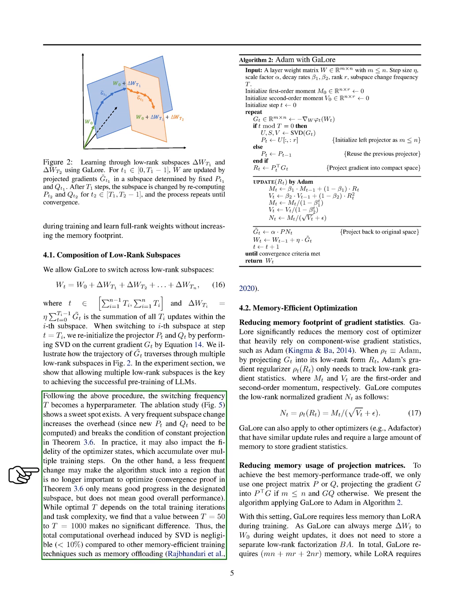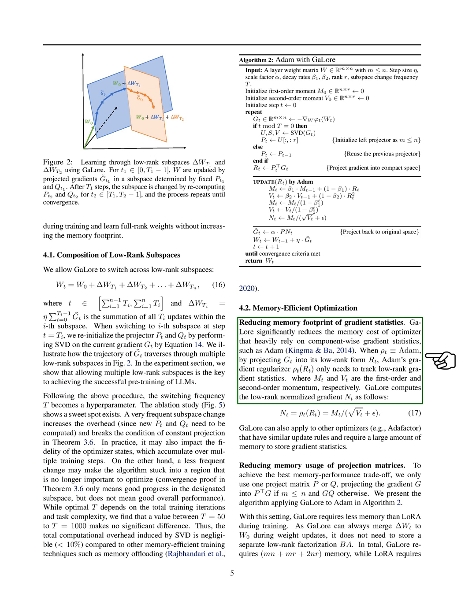Section: Memory-Efficient Optimization. In this section, we focus on optimizing memory usage in training deep learning models. We introduce GaLore, a method that reduces the memory footprint of optimizers like Adam, which heavily rely on gradient statistics. GaLore achieves this by tracking low-rank gradient statistics, making it more memory-efficient compared to traditional methods. GaLore can be applied not only to Adam but also to other optimizers like Adafactor that have similar update rules and require a large amount of memory for storing gradient statistics.